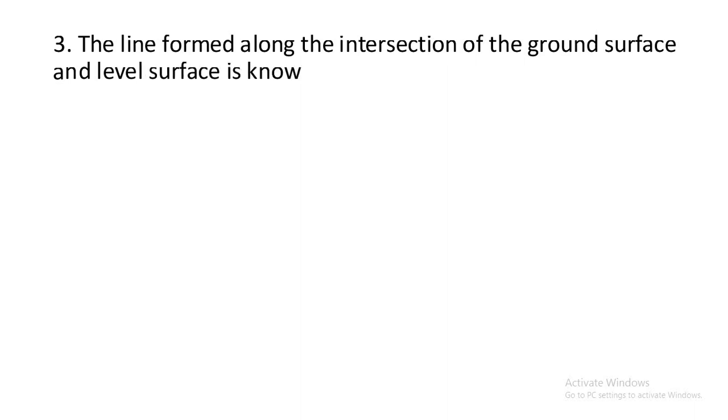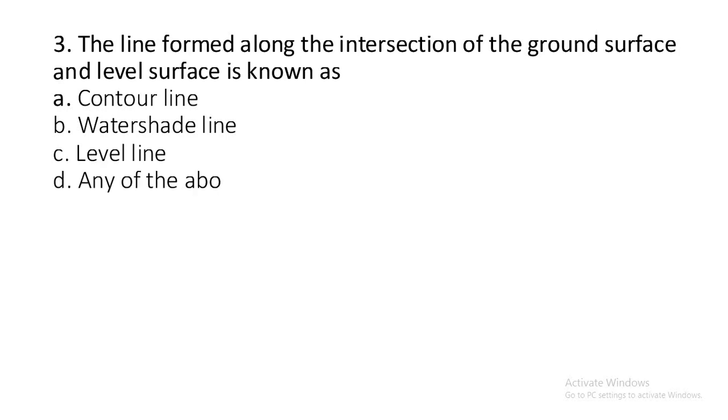Question number three: The line formed along the intersection of the ground surface and level surface is known as: contour line, watershed line, level line, or any of the above? It is contour line.